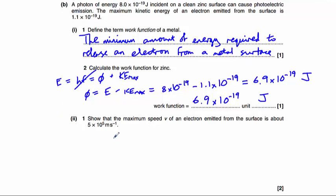And for part two, we need to show that the maximum speed v of an electron emitted from the surface is around about 5 times 10 to the power of 5 metres per second. So we know that kinetic energy equals half mv squared.